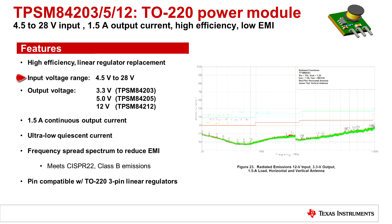They have an input voltage range of 4.5 volts to 28 volts with fixed output voltages of 3.3 volts for the TPSM 84203, 5 volts for the TPSM 84205, which is the device I'll be demonstrating today,